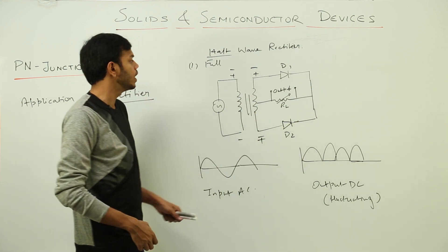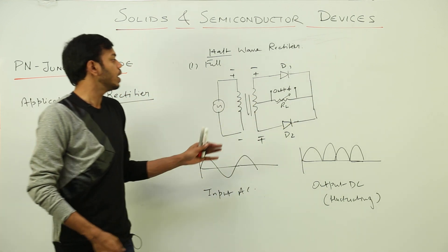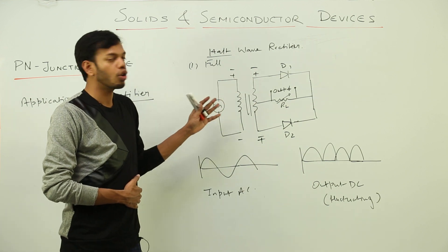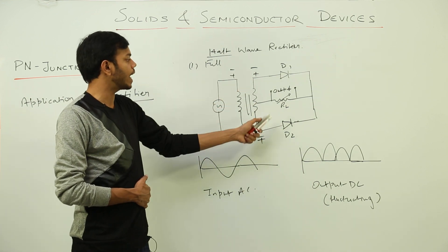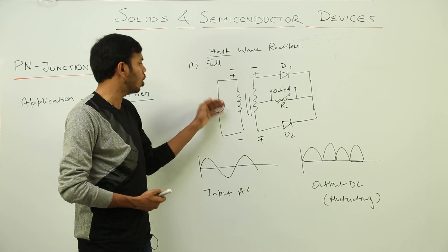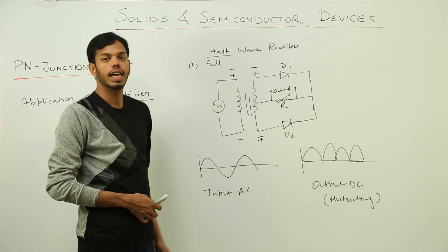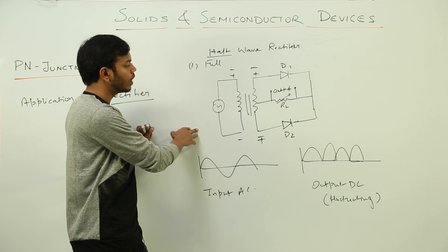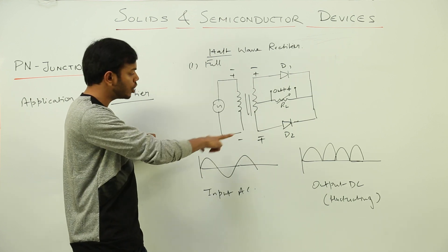That is why we put a transformer. Now the construction we were talking about construction parts, so you draw the circuit diagram and you mention the uses of each component: AC source, transformer, diodes and load resistance. And then you draw the working. During positive half cycle you have to mention the graph.